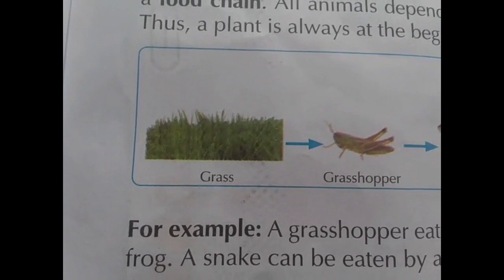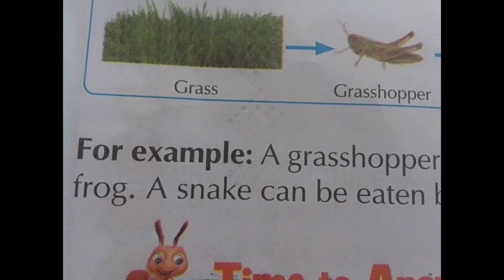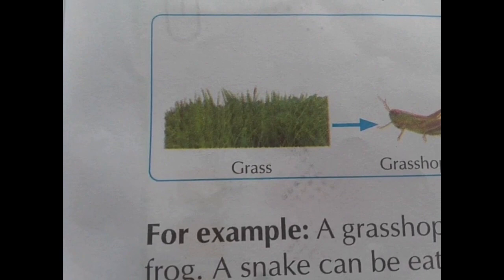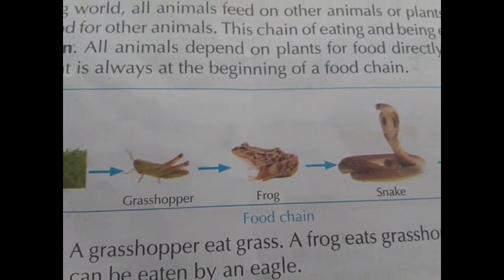A plant is always at the beginning of a food chain. We are eating vegetables — we depend on vegetables and other animals also. All animals depend on plants for food, directly or indirectly.